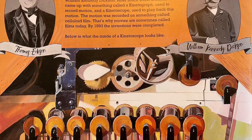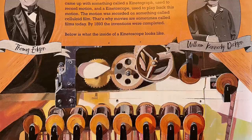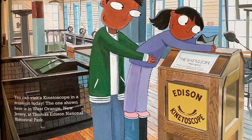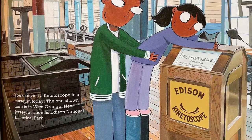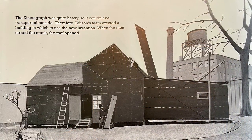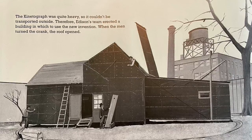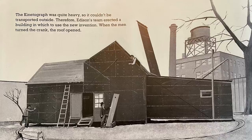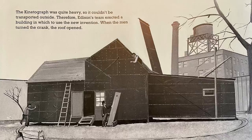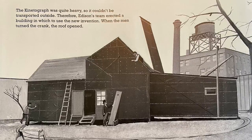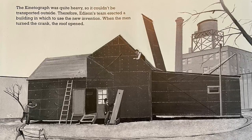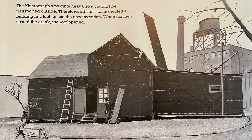Below is what the inside of a kinetoscope looks like. You can visit a kinetoscope in a museum today — the one shown here is in West Orange, New Jersey, at Thomas Edison National Historical Park. The kinetograph was quite heavy, so it couldn't be transported outside. Therefore, Edison's team erected a building in which to use the new invention. When the men turned the crank, the roof opened. When they pushed the building around the circular track, the roof and sun aligned, allowing sunlight to pour in and light up their film's subjects. This is the Black Maria, named after a police wagon, in 1893.